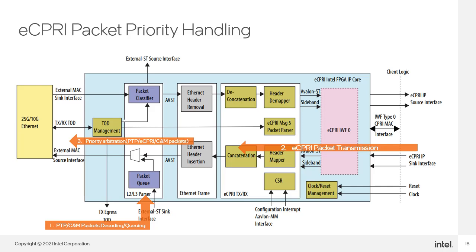This diagram highlights how arbitration works. One: PTP and CNM packets are coming in. Two: at the same time, eCPRI packets are coming in through packet transmission, creating a collision. Three: priority arbitration determines that the PTP packet will go first, the eCPRI packet is next, and any CNM packets are allowed after that. One thing to note is that if an eCPRI packet transmission is already in process, it will finish before the higher priority packet is sent. For example, if the IP is in the middle of sending a 1500-byte eCPRI packet and a PTP packet comes in, the IP will first complete the existing packet and then prioritize the PTP packet.